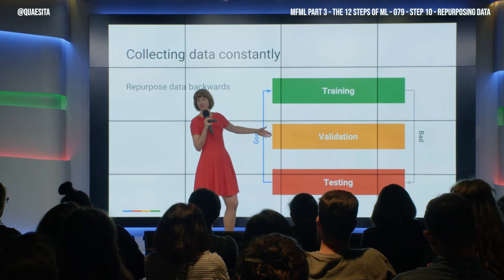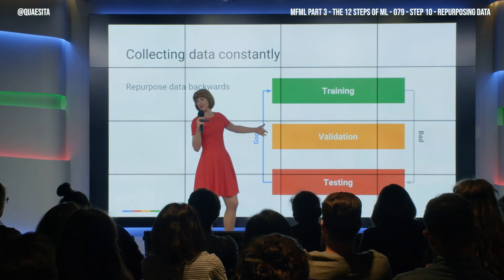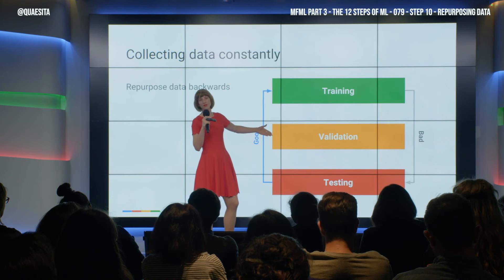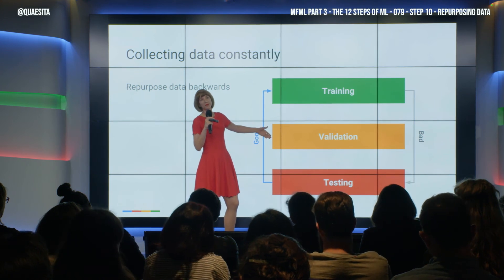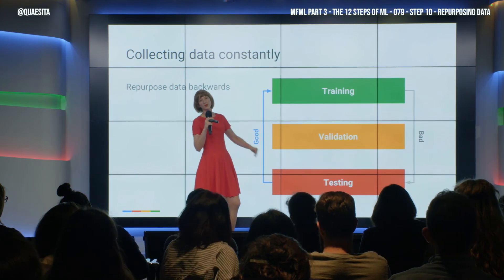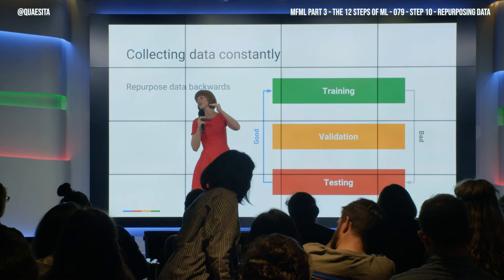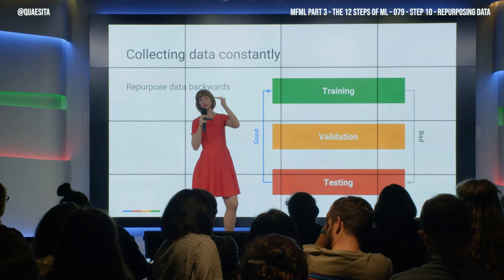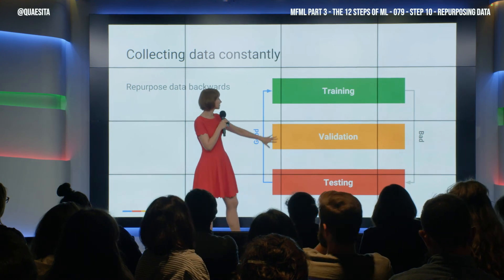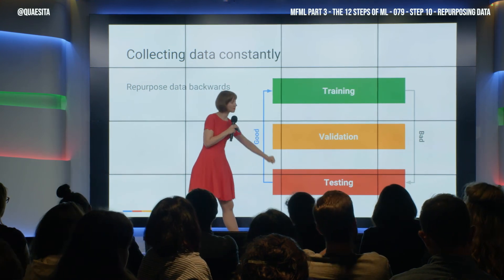How about validation? Back to our professor analogy — what's good for validation? Only data where we have not dug into the individual instances, where we don't know about the individual patterns in it.